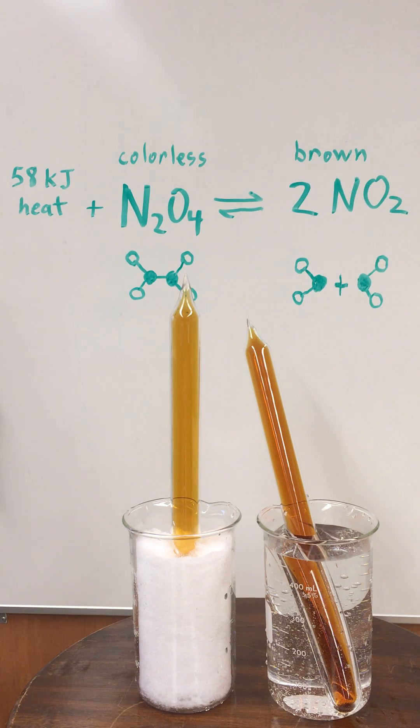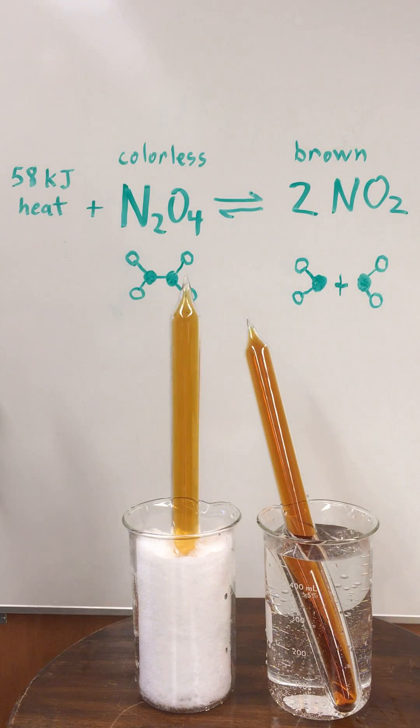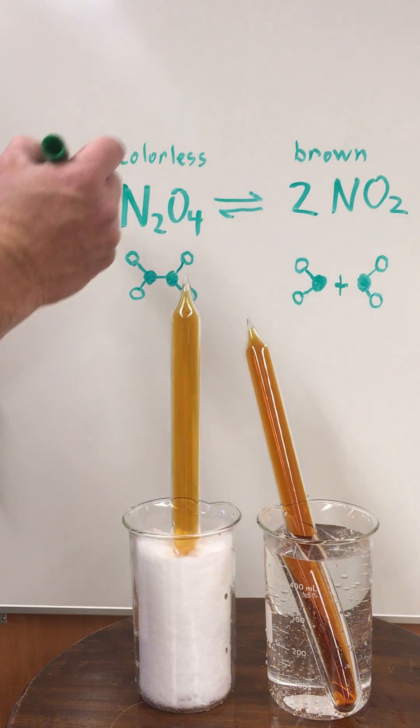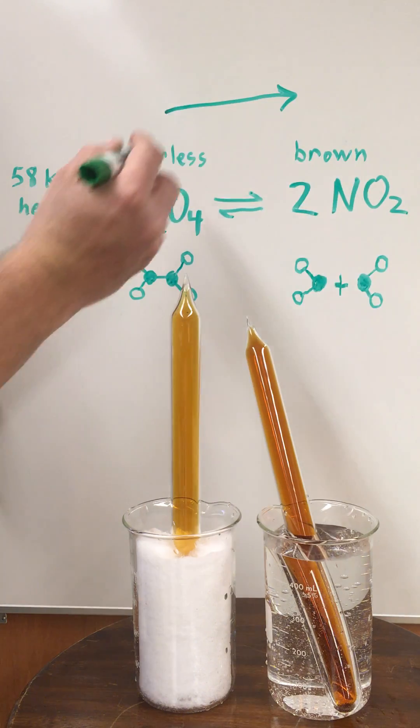And so if we take this system at equilibrium and we increase the temperature, what's going to happen is that the system will try to respond by shifting towards the product side, to the right.